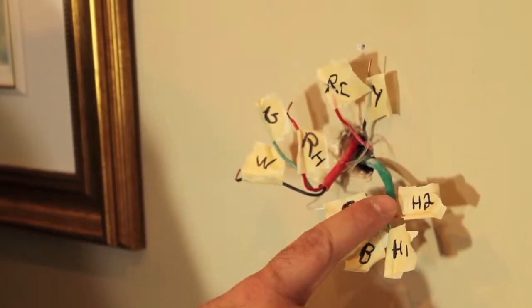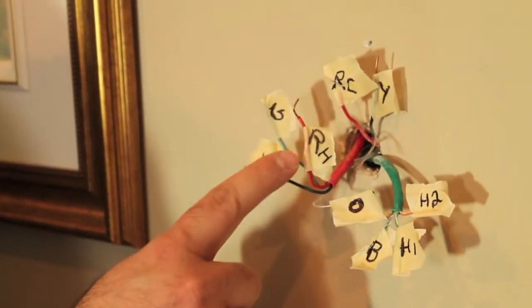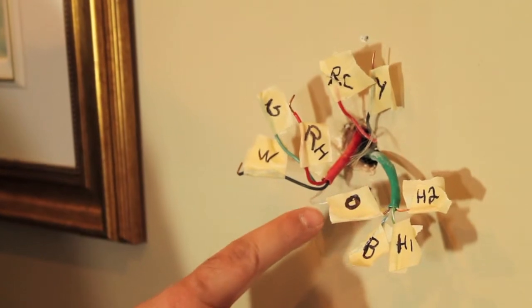These terminal designations should match the ones on your new thermostat. If you have wires designated H1, H2, RC, RH, O and/or B, you should be using the M6007 exclusively.